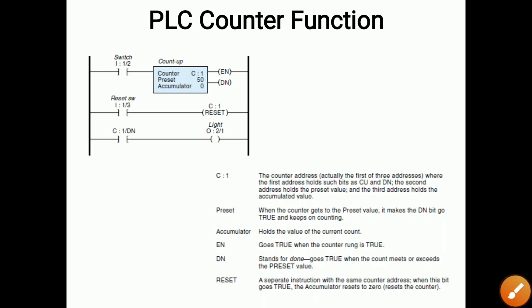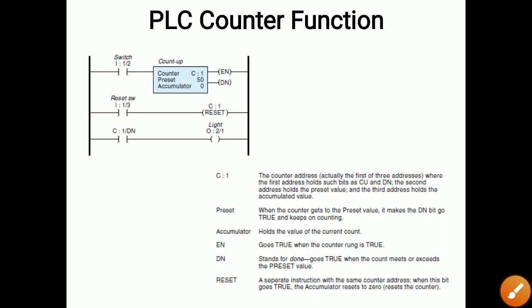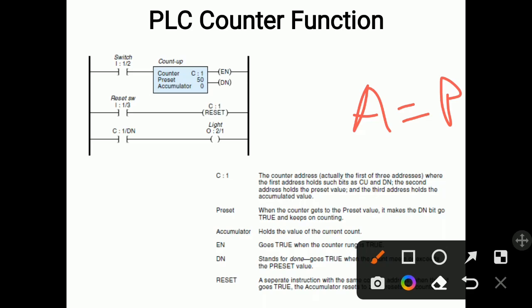The preset is the value at which the counter makes the DN bit true and keeps counting. The accumulator holds the value of the current count. EN goes true when the counter rung is true. When the accumulated value equals the preset value, DN activates, the DN contact closes, and the light turns on. If you want to reset the counter, close the reset contact and the counter will reset.